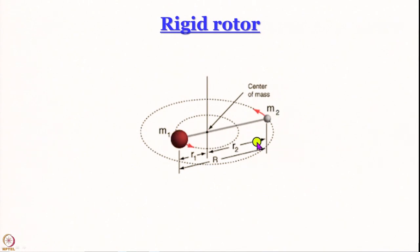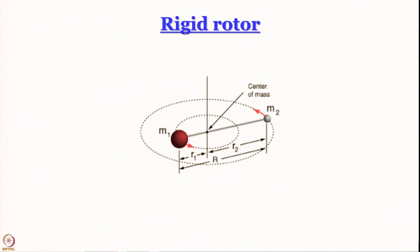Let's say we have a diatomic molecule like HCl, where H has mass m₂ and Cl has mass m₁. The distance of m₁ from the center of mass is r₁, the distance of H from the center of mass is r₂, and the internuclear separation is capital R, where R = r₁ + r₂. Since we are dealing with molecules, we must use quantum mechanics, involving wave functions and operators.